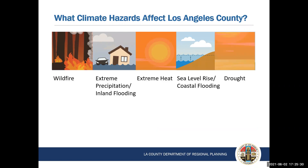So what climate hazards is Los Angeles County facing? According to the Los Angeles region report prepared by the California Fourth Climate Assessment, Southern California can expect more wildfires, extreme precipitation that can result in inland flooding, extreme heat, sea level rise that can result in coastal flooding, and also drought. These threats are typically referred to as climate hazards. The year 2020 has been challenging, not only because of the pandemic, but also because of the climate hazards like wildfire and extreme heat that we have experienced here in LA County.